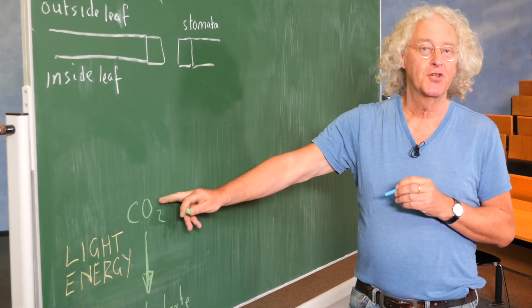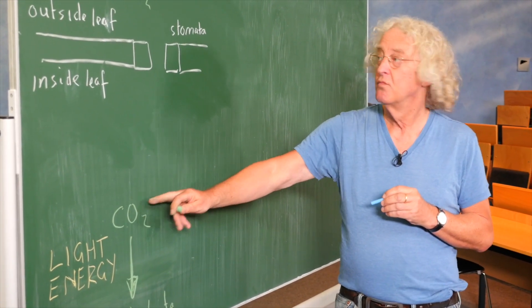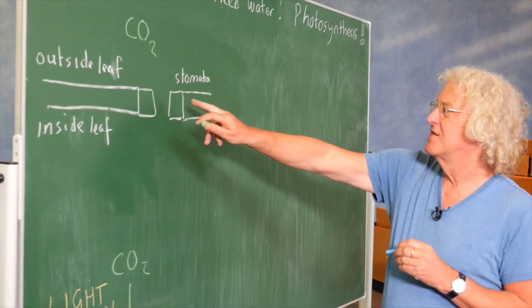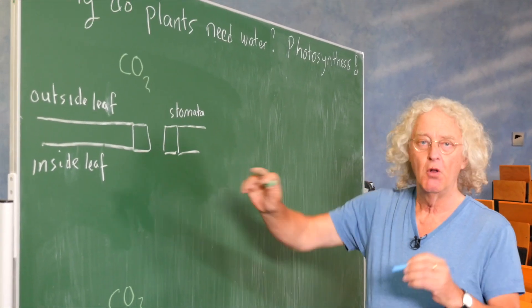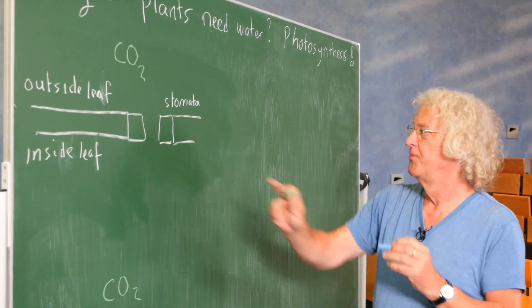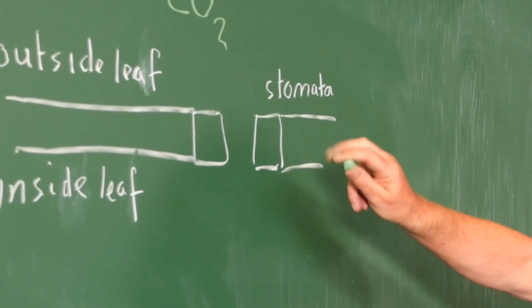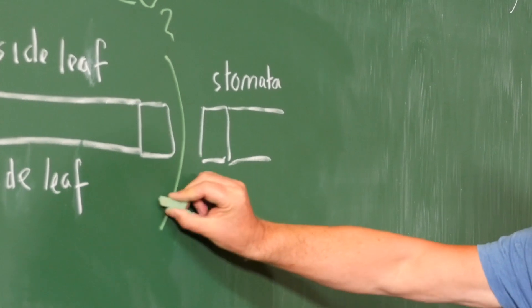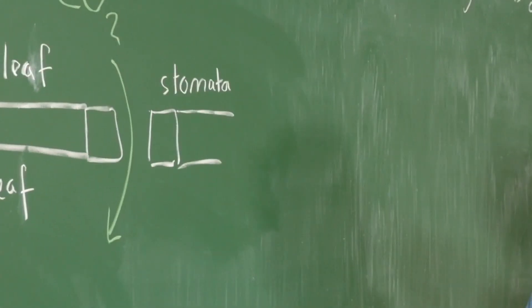But how does the carbon dioxide get into the leaf? The carbon dioxide gets into the leaf through many small holes or pores called stomata on the leaf surface. So the carbon dioxide comes in. No problem.